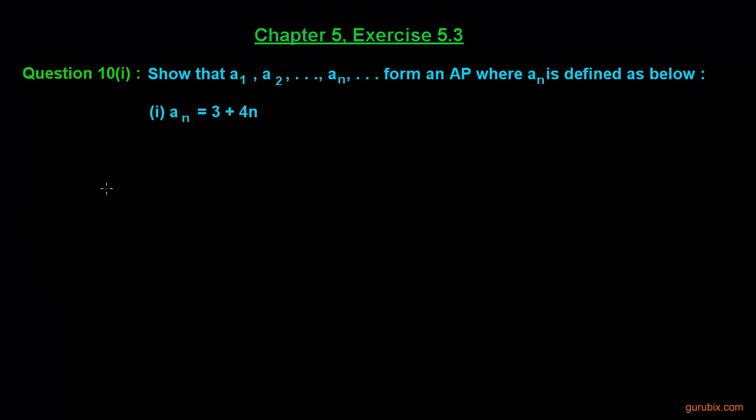Here is the first part of question 10 of exercise 5.3 of chapter 5. This question says show that a_1, a_2, dot dot a_n forms an AP where a_n is defined as below, and a_n is given equals to 3 plus 4n.